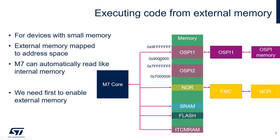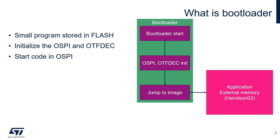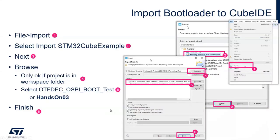To be able to run the application, we can do two things: one is to modify hands-on number two to initialize the OctoSPI and modify the linker heavily, or we create a separate small application which we can call a bootloader. The job of this application will be to initialize the OctoSPI, set up the on-the-fly decryption, and then jump into hands-on number two which is directly inside the OctoSPI. This is the approach I chose, and I already prepared a small project which we need to import inside CubeIDE.